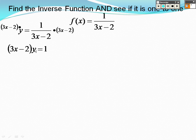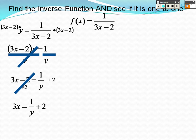I know some of you want to jump the gun and distribute, but remember, you want to get the x by itself. So I'm actually going to divide both sides by y, because when I do that, now I can try to get that x by itself. Now I'm going to add 2. So I've got 3x equals 1 over y plus 2. Then to get x by itself, I'm going to have to divide by 3.